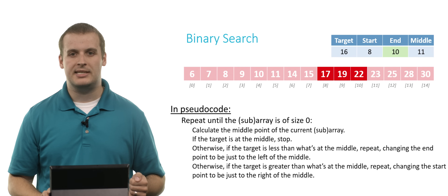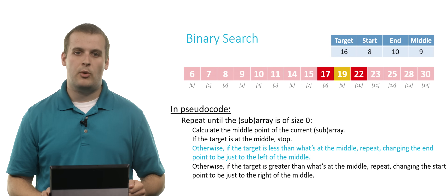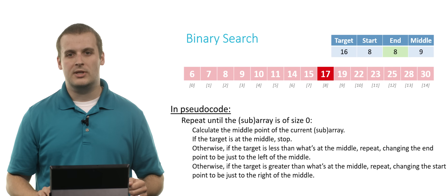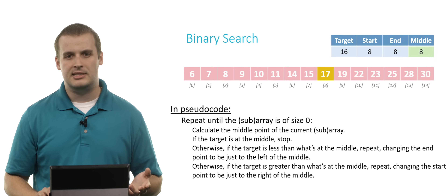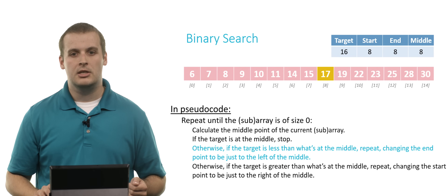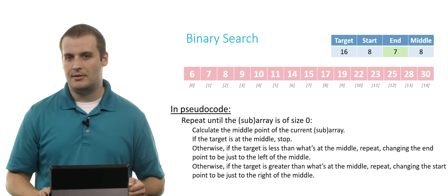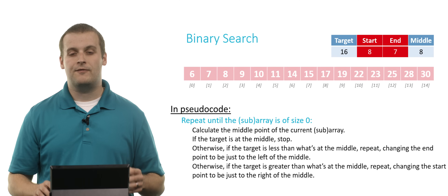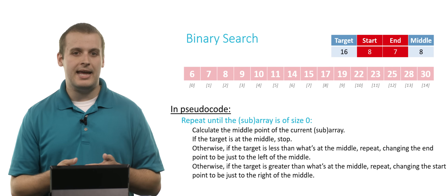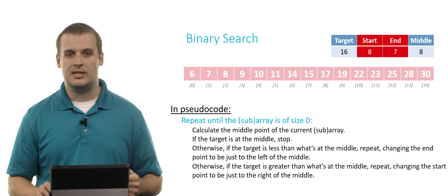We go through the process again: 8 plus 10 divided by 2 is 9. Is 19 what we're looking for? No — still looking for a number less than that, so we change the endpoint to just left of midpoint 9, making it 8. Now we're looking at a single-element array — start is 8, end is 8, midpoint is 8. Is 17 what we're looking for? No — we're looking for 16, so we'd set the endpoint to 7. But now start is greater than end — the two ends of our array have crossed. That means we have a subarray of size zero, and we can now guarantee that element 16 does not exist in the array.